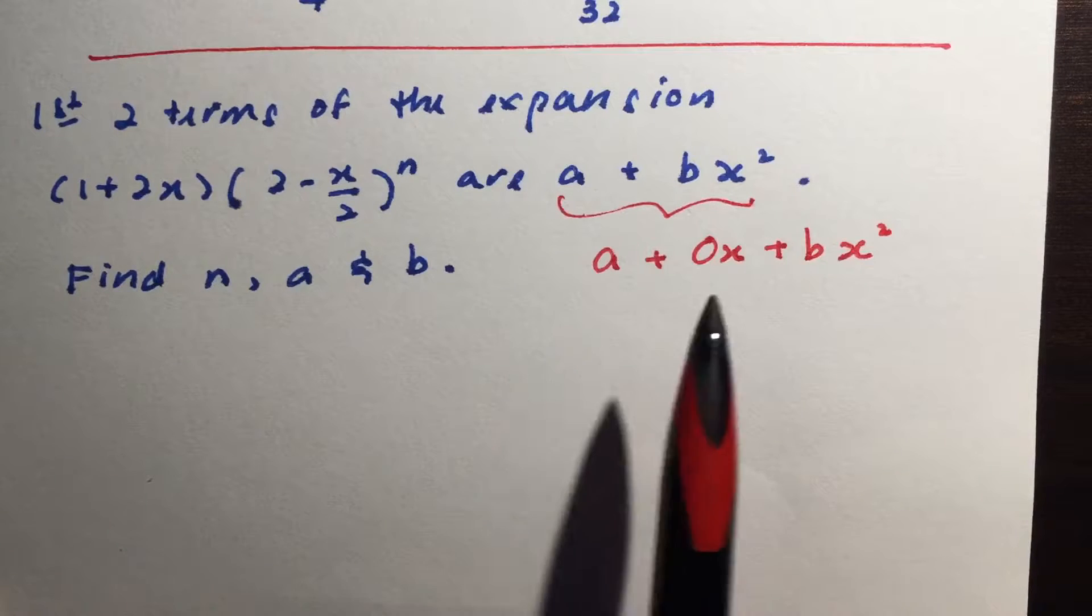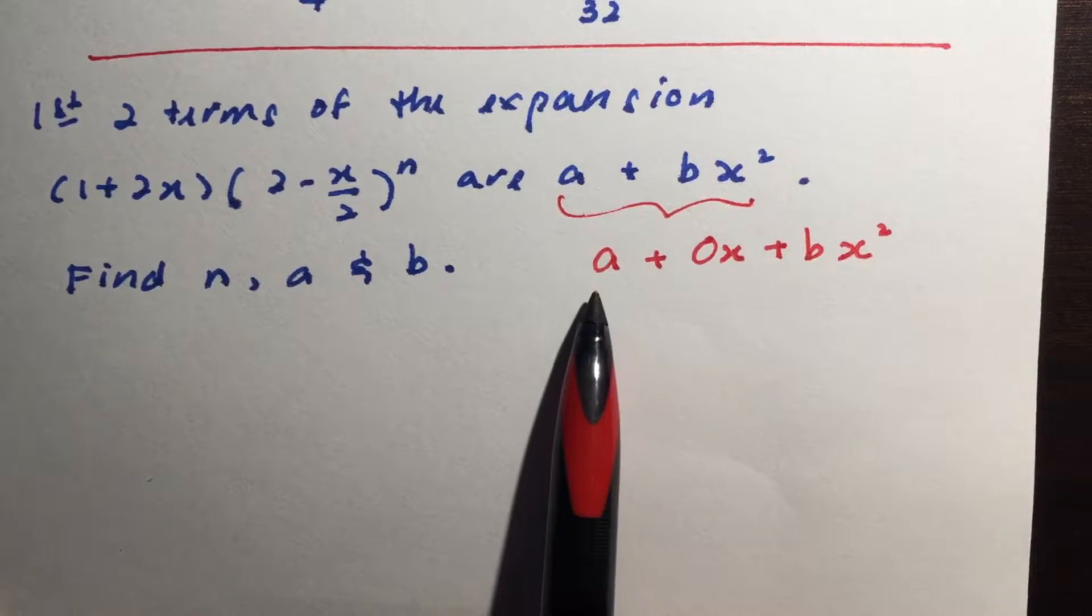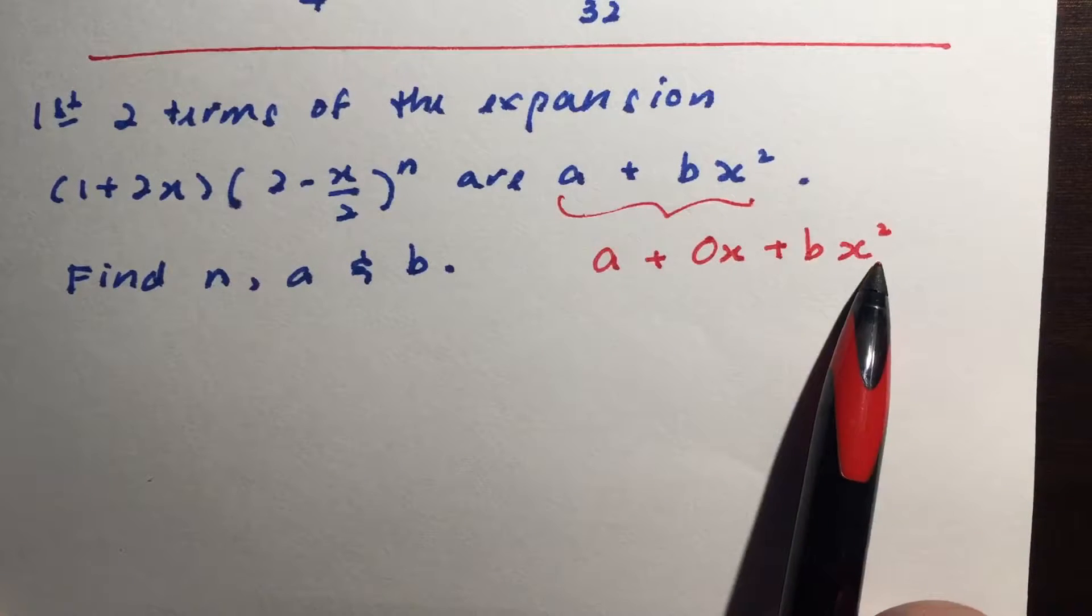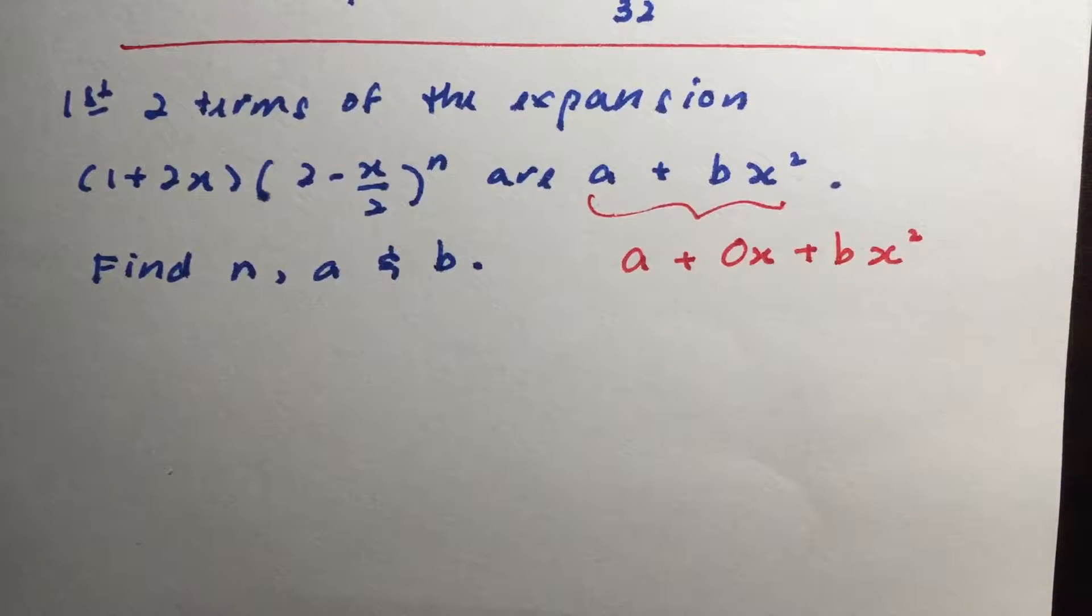But normally when we do any expansion, we always do it in something like a Doremi kind of form. So we have the constant, the x, the x squared, the x cubed, and so on. So this will help us eventually. So I would rather you write it out that way.